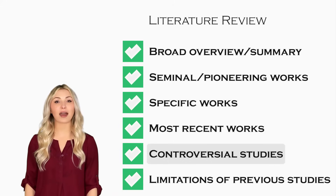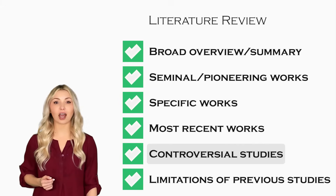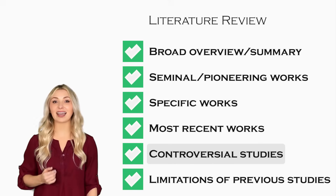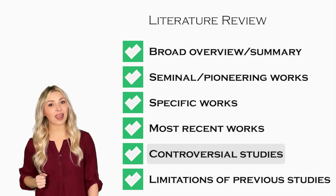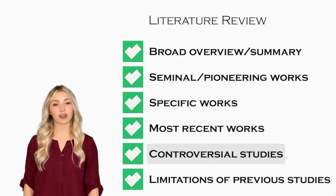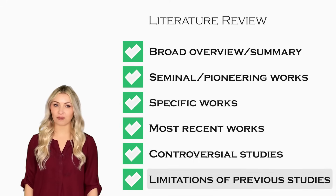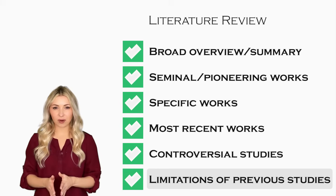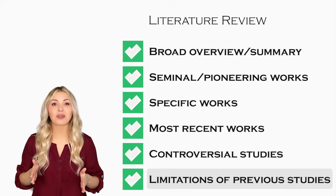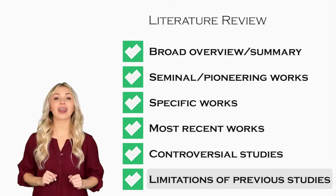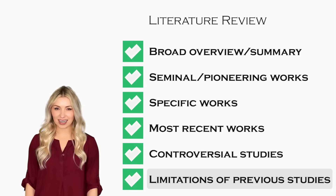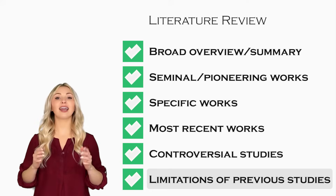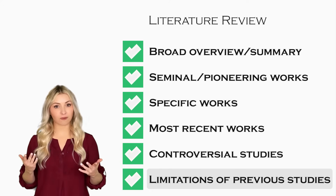Then you can talk about controversial literature related to your topic, if there is any — studies that led to conflicts and debates among researchers in your field. Towards the end of the literature review, you have to establish the research gap. A research gap is a problem that has not been addressed or answered in previous studies. You must highlight the drawbacks of previous works and clearly explain what is missing from the literature.